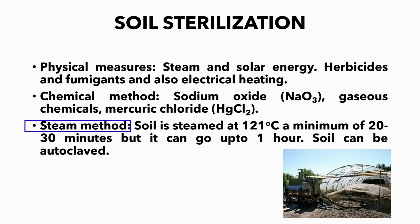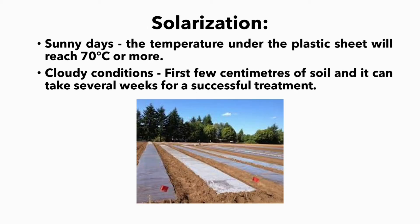Soil is steamed at 121 degrees Celsius for a minimum of 20 to 30 minutes, or even up to one hour. Soil can be autoclaved. Solarization can be carried out in any nursery. You can see in the picture that the moist soil is covered with a transparent polyethylene sheet.